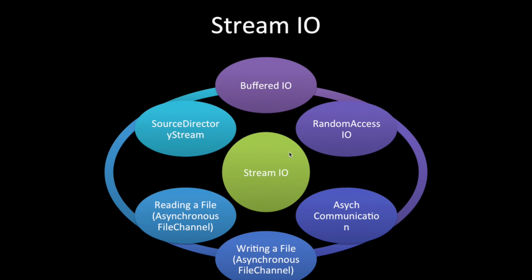Next, concerning stream I/O, we have buffered I/O, random access I/O, async communication, writing a file, reading a file, async file channel, and source directory. Stream I/O was well defined in I/O prior to JDK7. What's new here is asynchronous file channels and the use of a new BufferedReader and new BufferedWriter.